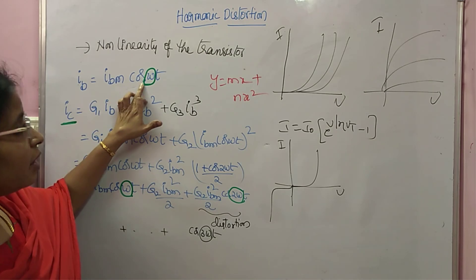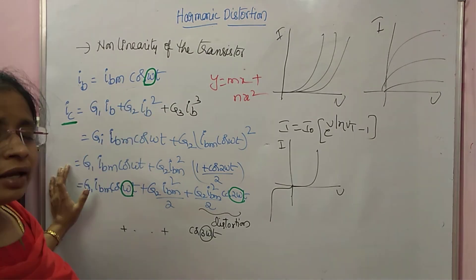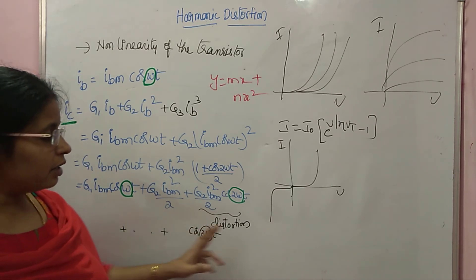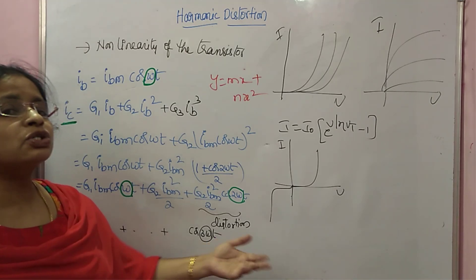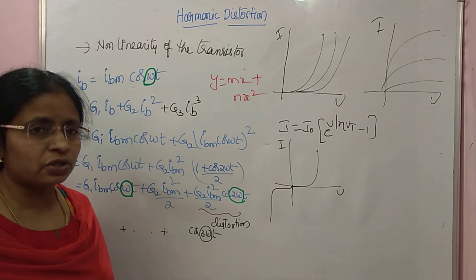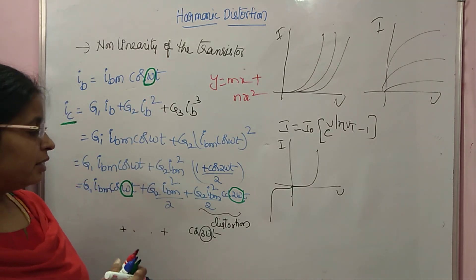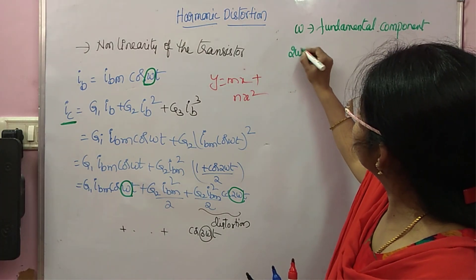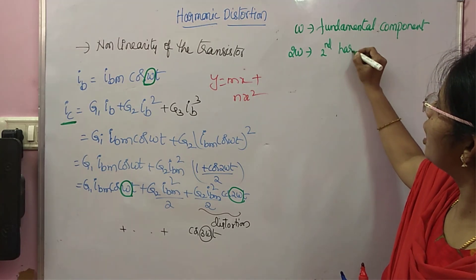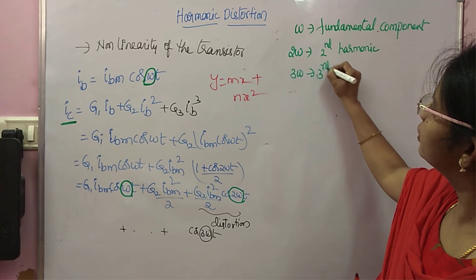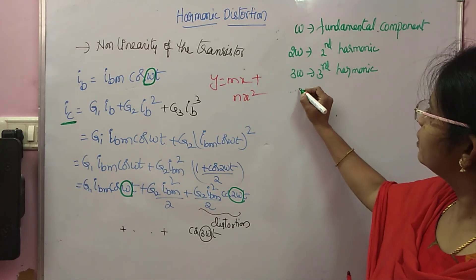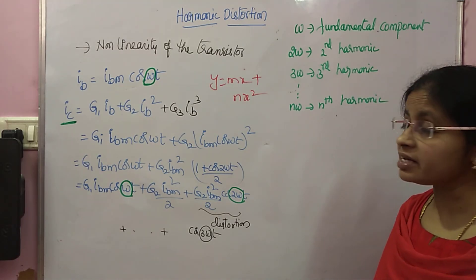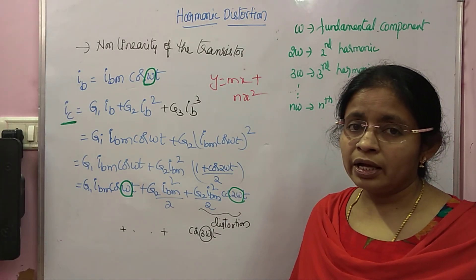You are given an input signal with frequency ω. The output must consist of only that ω term for no distortion. But here we are getting 2ω and 3ω terms, which lead to distortion — and that distortion is called harmonic distortion. The ω term is called the fundamental component; 2ω is the 2nd harmonic; 3ω is the 3rd harmonic; and nω is the nth harmonic. Since the distortion is due to these harmonic frequency terms, it is called harmonic distortion.